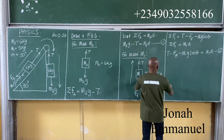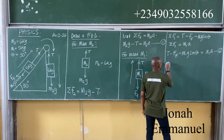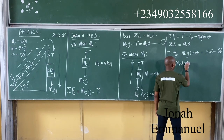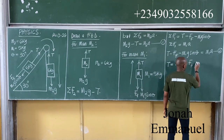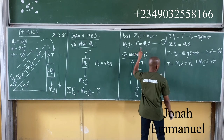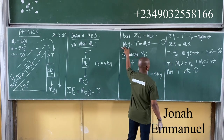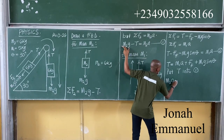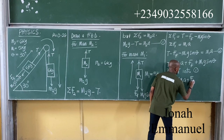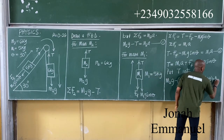The concept will now be to make T the subject of equation 2. So T will now be equal to M1a plus ff plus M1g sin theta. Now put this value of T into equation 1. If I put T into equation 1, I will have M2g minus the bracket M1a plus ff plus M1g sin theta, equals M2a.